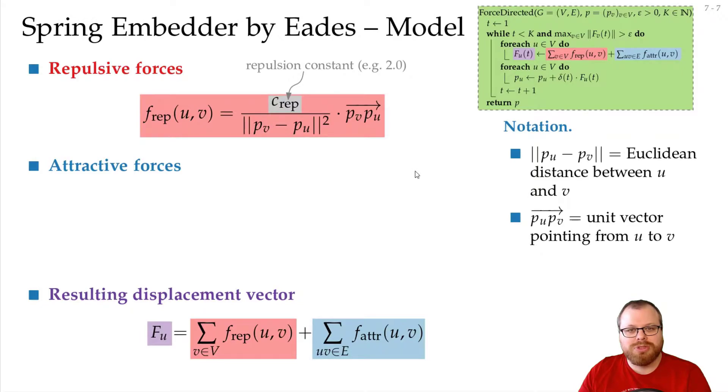So we put this force onto u, that means we have to direct it away from v because we want it to be pushed away. And this here is some repulsion constant. That constant you can choose yourself. Eades said that the choice of 2.0 is usually a good one, so we will just use that for now. So looking at this, the further away these two are, the smaller the force gets. And since we don't want this to change linearly, we have the distance squared.